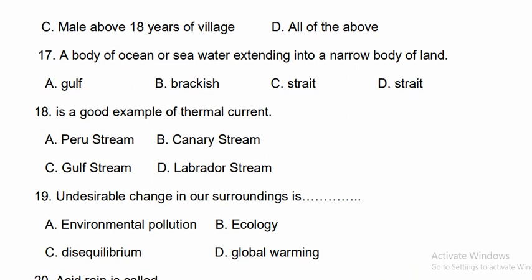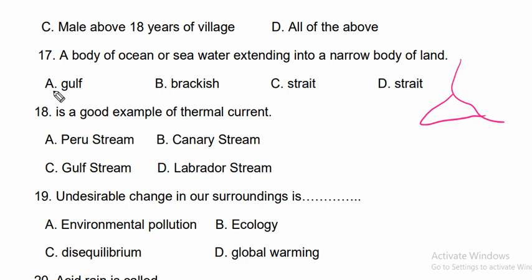Question seventeen: A body of ocean or sea water extending into a narrow body of land is called a gulf. Question eighteen: The Gulf Stream is a good example of a thermal current — Gulf Stream is the correct answer among options Peru Stream, Canary Stream, Labrador Stream, and Gulf Stream.